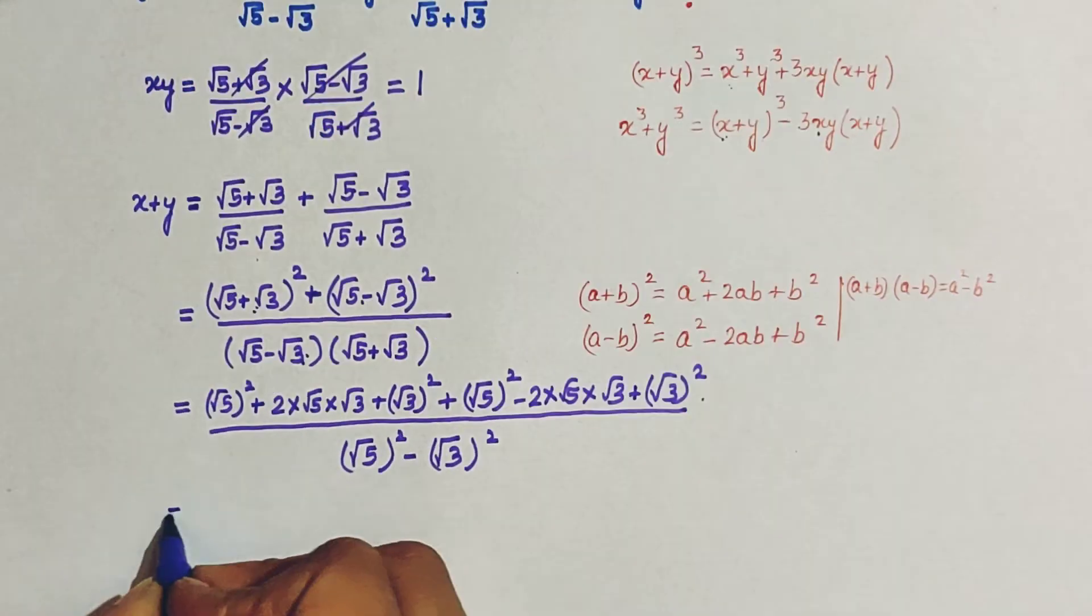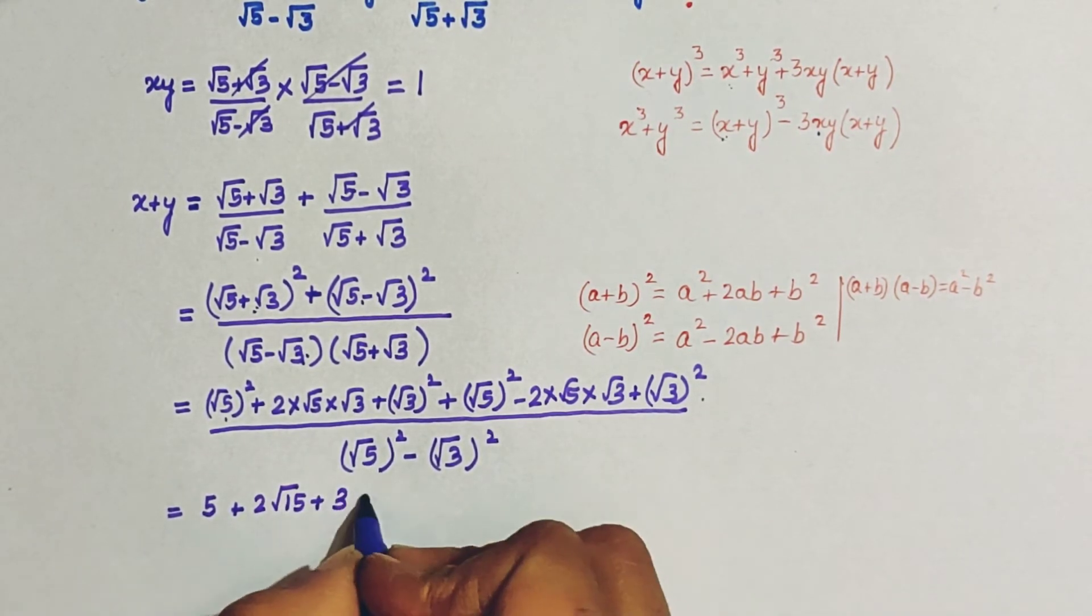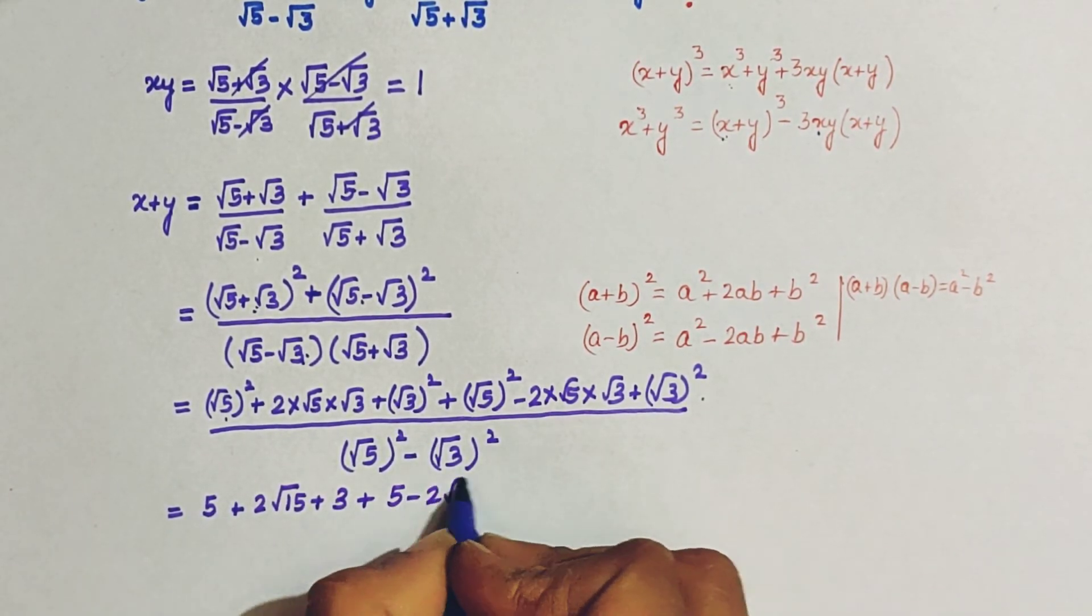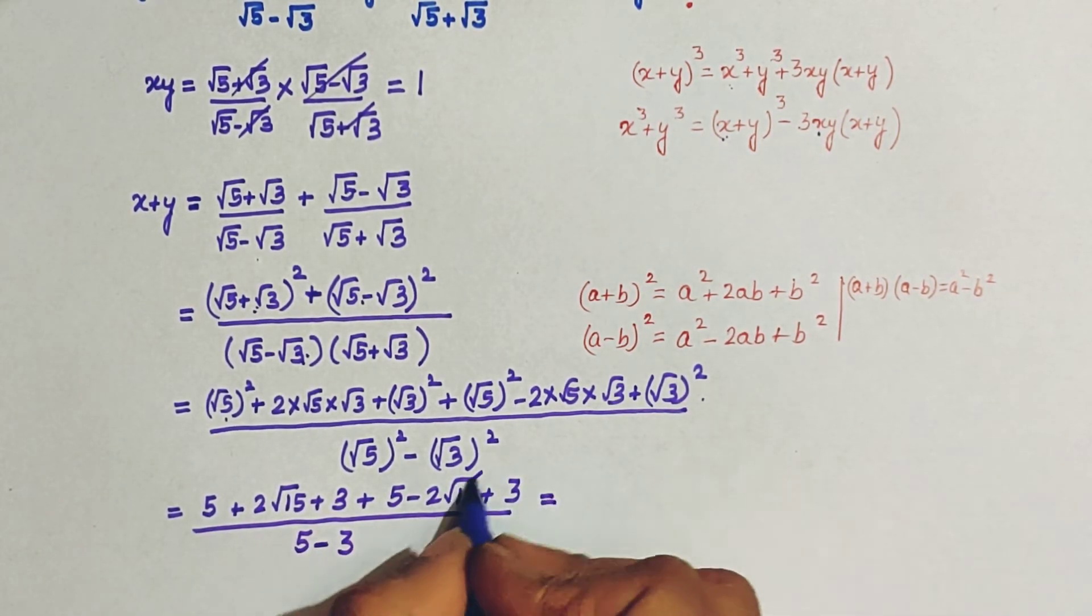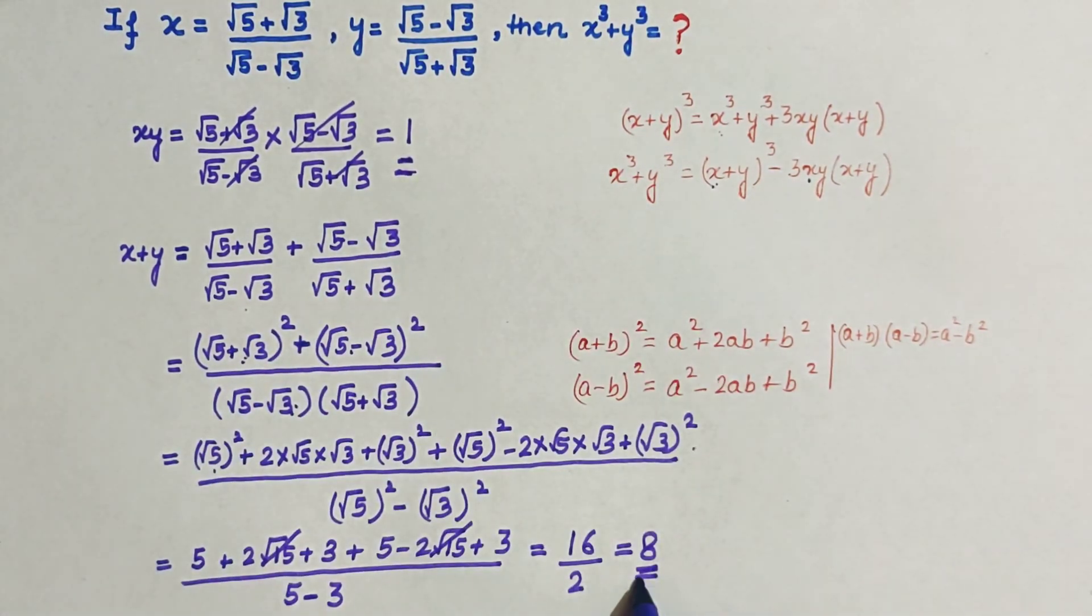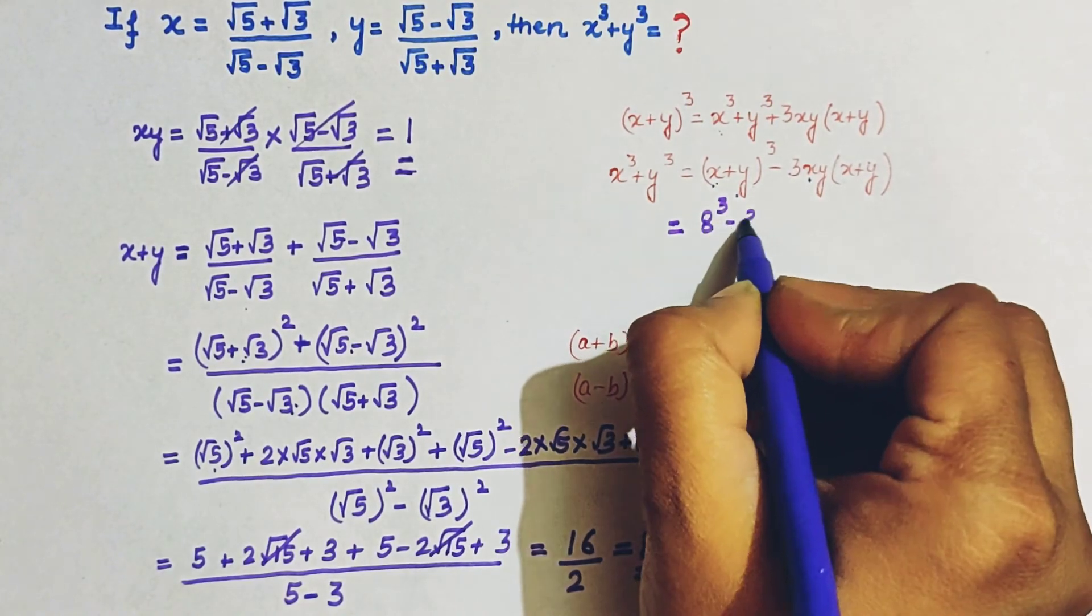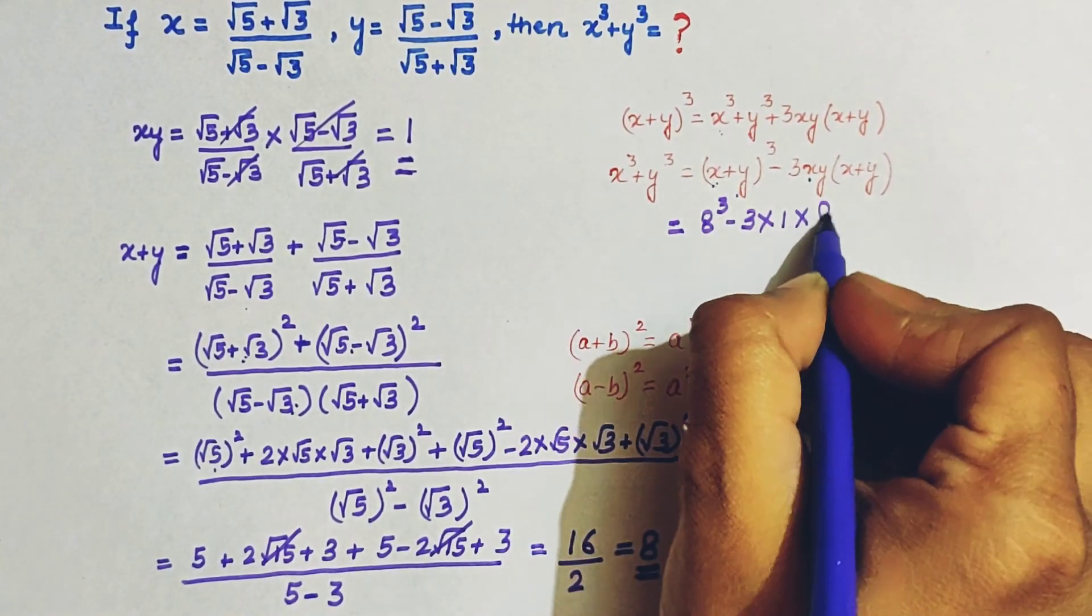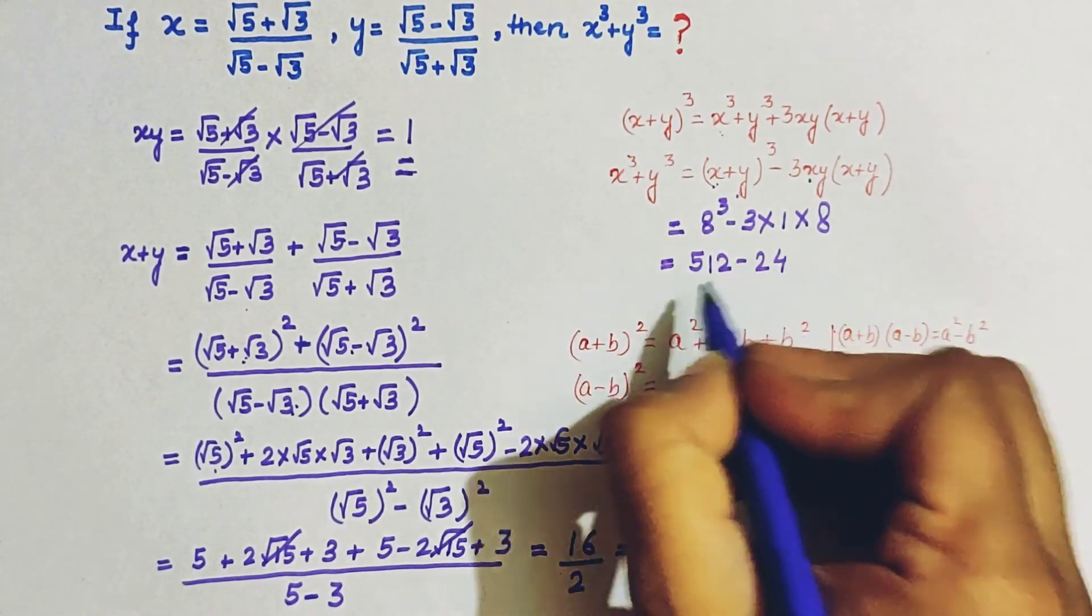अब further simplify कीजिए: 5 plus 2 root 15 plus 3 plus 5 minus 2 root 15 plus 3 minus 3. So this is equal to, this and this will get cancelled. अब आप product को और sum को यहाँ पर put कर दीजिए. So this will be 8 cube minus 3 into 1 into 8. And this is 512 minus 24. इसी की value आपको find करने थे. And it's simple.